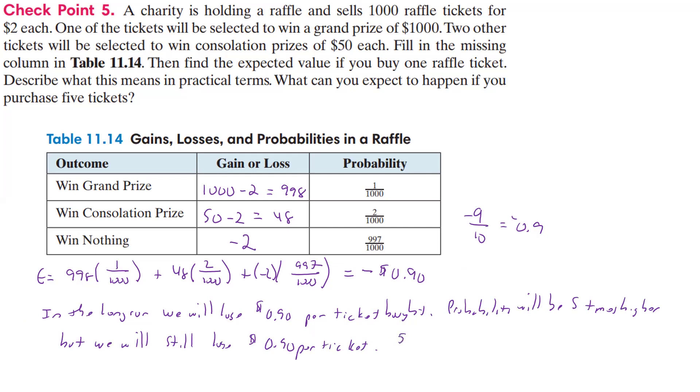So in the long run, if we buy five tickets, five times that's going to be 45, so that looks like we're going to lose $4.50 lost in that case, if we buy the five tickets. So that's what it means in the case of this, where we're doing a raffle.